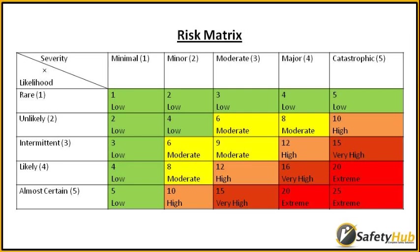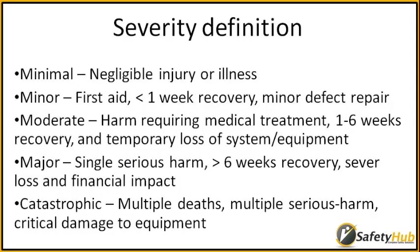On the left-hand side we've got the likelihood of things occurring, starting at the top with 'rare', increasing to 'almost certain'. Along the top we've got the severity — from 'minimal', all the way to the right, 'catastrophic'. Within your business you may wish to discuss the definitions of these terms, but the following are a starting point. Minimal means hardly any injury or illness, all the way to catastrophic — multiple deaths, multiple serious harm, critical damage to equipment.